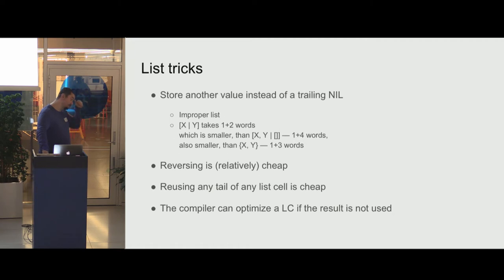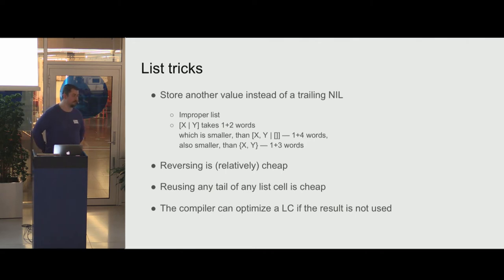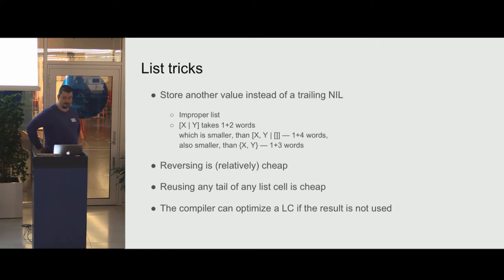Reversing a list is cheap — you just copy it and it naturally reverses if you take from the head and put to the head. The reverse function is implemented in C. If you have a pointer to any list cell, the tail from that point is never modified — it's always constant — so reusing it is efficient. Also, the compiler is smart enough to optimize list comprehensions: if you don't use the result, it will drop the values and turn it into a simple loop.